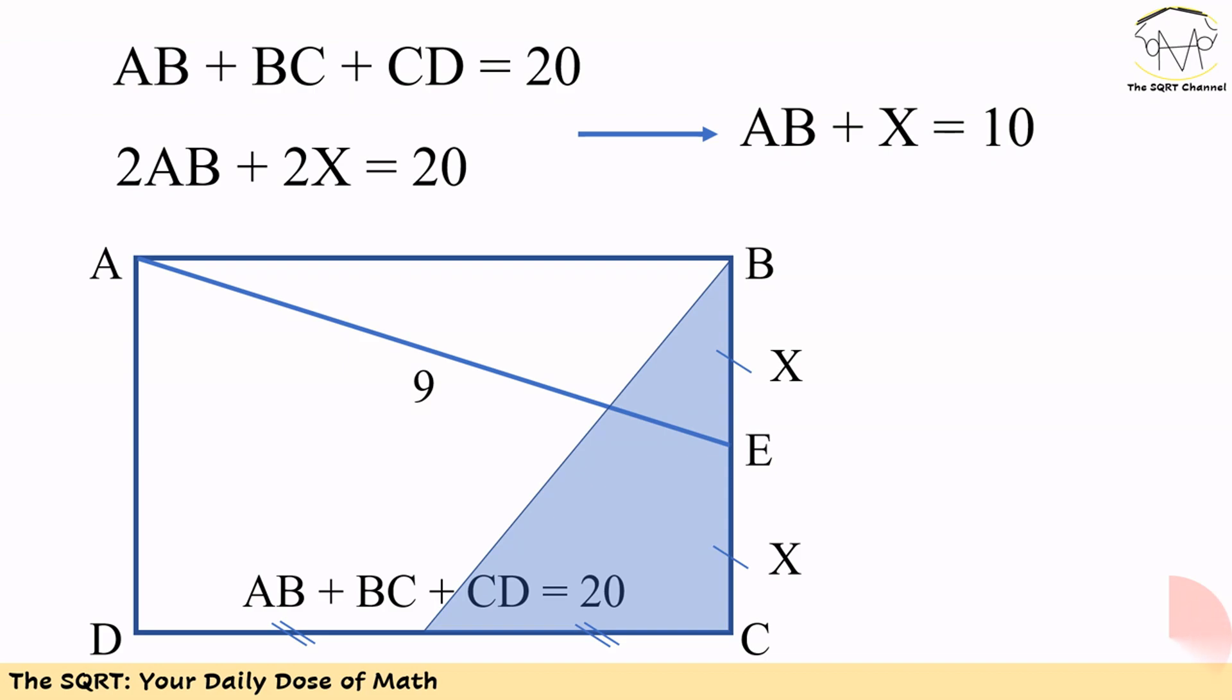If we replace the values that we have for AB, CD and BC, we will end up with 2AB plus 2X is equal to 20. And then if we divide both sides by 2, we will have AB plus X is equal to 10.